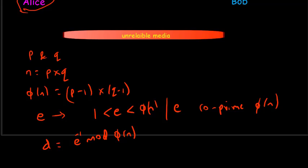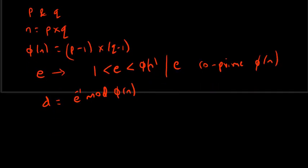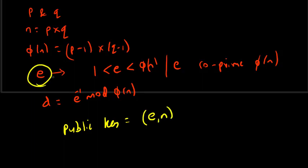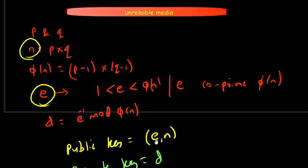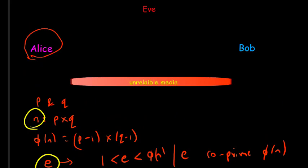Now that we have calculated these parameters, we can identify the public and private keys. The public key is the pair (e, n), where e and n are the values already calculated. These are the public key. The private key is d. Alice will share her public key (e, n) through the unreliable channel, so e and n are known to everyone, even an attacker, but d is kept secret.